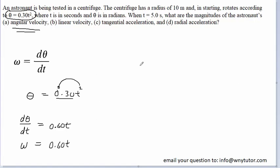And then since the question states that the time is 5 seconds, we simply have to plug in 5 seconds for t. And so when we do that, we end up with 3.0 radians per second is the standard unit for the angular velocity. So this is the correct answer to part A of the question.